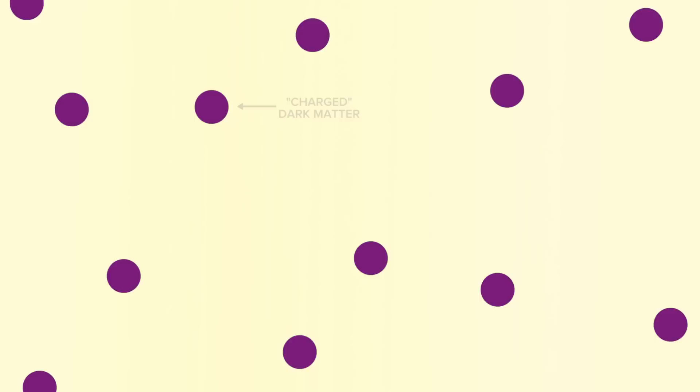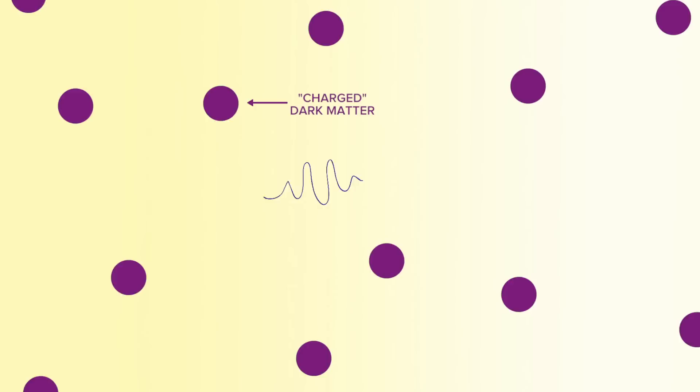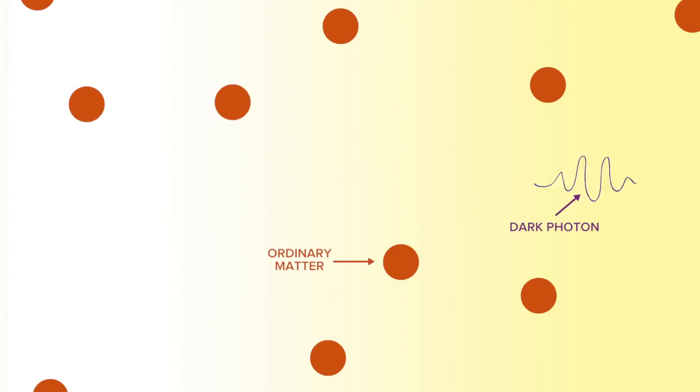But what if dark matter had a different kind of charge, a dark charge so to speak? If it did, we could imagine that, in analogy to familiar electromagnetism, that particles carrying dark charge could emit dark photons and feel the force of dark electric fields. Because ordinary matter doesn't carry this hypothetical dark charge, these dark photons zip by ordinary matter without interacting at all. We just wouldn't see them.